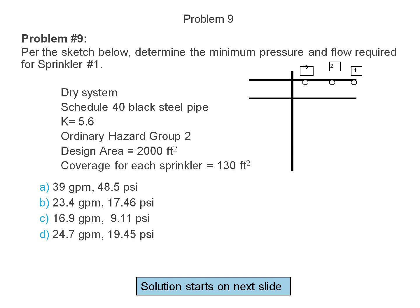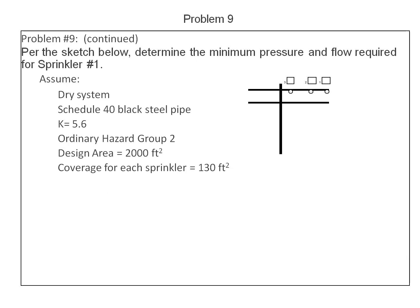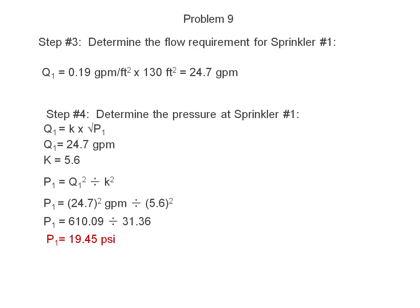The outline for this is a dry system, schedule 40 black steel pipe, the K is equal to 5.6, it's an ordinary hazard group 2, the design area is 2,000 square feet, and the coverage for each sprinkler is equal to 130 square feet. Is the answer A, 39 gallons per minute at 48.5 PSI, B, 23.4 gallons per minute at 17.46 PSI, or C, 16.9 GPM at 9.11 PSI, or D, 24.7 gallons per minute at 19.45 PSI.